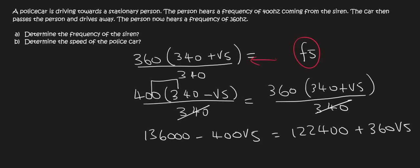And now you just solve for Vs. So if you take the 400 over, you end up with 760 Vs equals 13,600, and then you just divide by 760. And so therefore, Vs, which is the velocity of the source, is 17.89 meters per second. And so that is how fast the police car is driving.